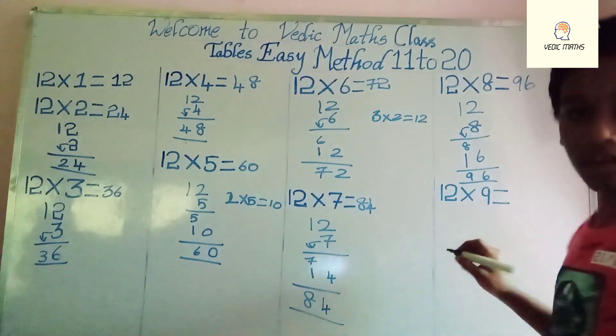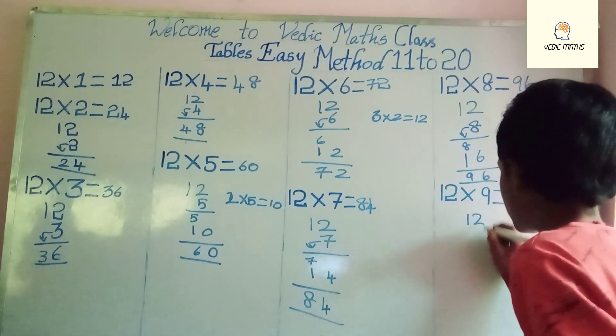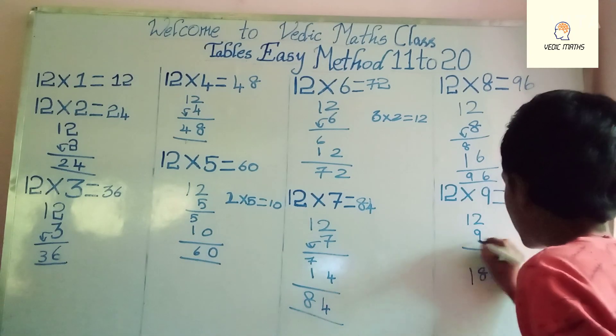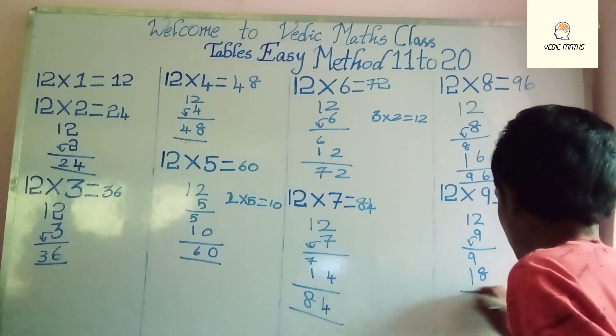12 into 9: write 1 here and 9 here, that 9 into 2 is 18, and write the multiplier 9 here, and that's 108.